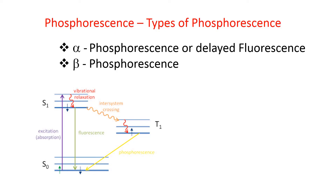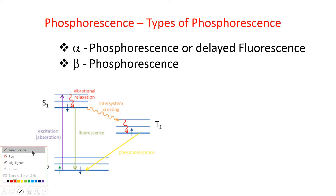In my previous video, I have explained in detail about radiative and non-radiative transitions using the Jablonski diagram. The excited electronic states are the singlet state and triplet state, and the ground state is always a singlet state. After absorbing radiation, the molecule gets activated, the electron pair becomes unpaired, and one electron from the ground singlet state is promoted to a higher energy singlet state.